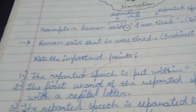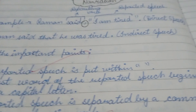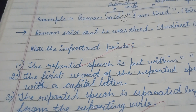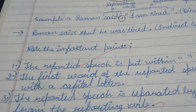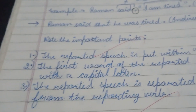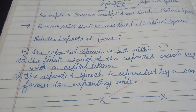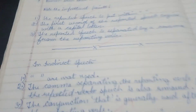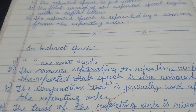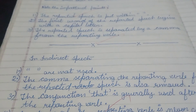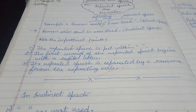Third, the reported speech is separated by a comma from the reporting verb — you can see the comma after 'Raman said' is encircled in black. These three things we can notice in a direct speech statement. In indirect speech, quotation marks are not used, and the comma separating the reporting verb from the reported speech is also removed.